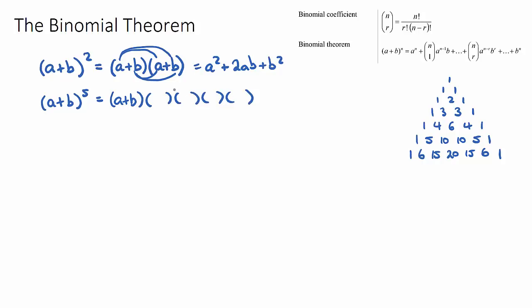So this is a binomial expansion where the power was two. But when we start getting IB questions where it's a plus b to the power of five, if we were to write the bracket a plus b five times, we'd be sitting there all day trying to expand these brackets. So there is a shorter way to do this called the binomial theorem. The formulas given in IB exams do look a little bit complicated and scary, but we'll go through an example and they're actually not as bad as they look.